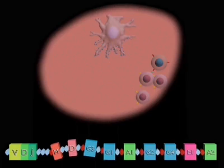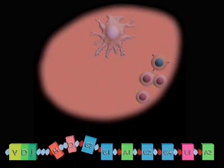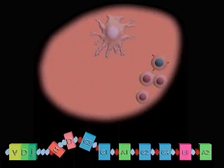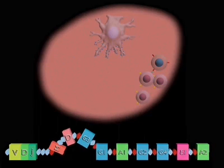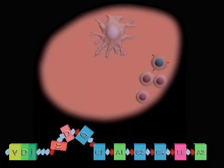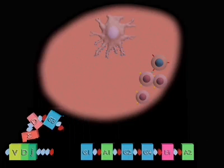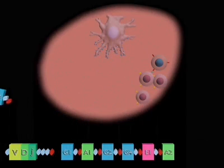Here we see the event which occurs as a B cell switches from making IgM to IgG1. The C gene for IgG1 replaces the C gene for IgM, placing it next to the VDJ gene.